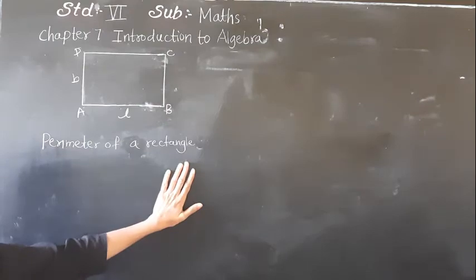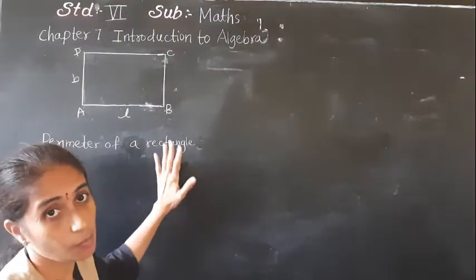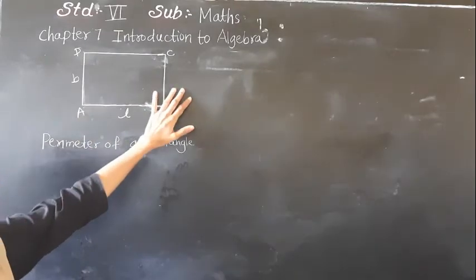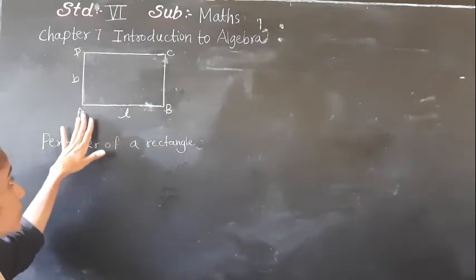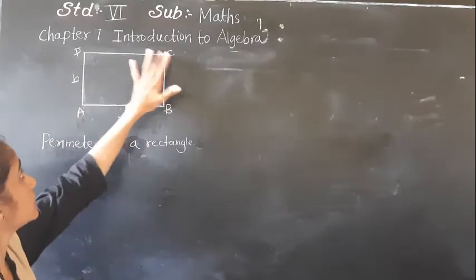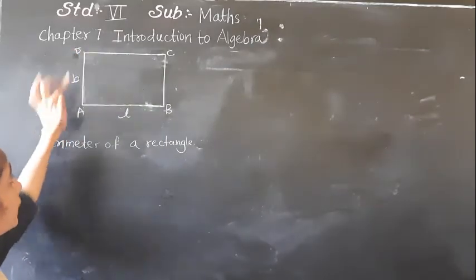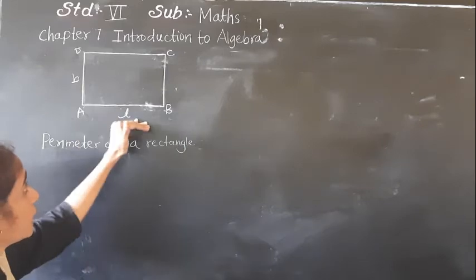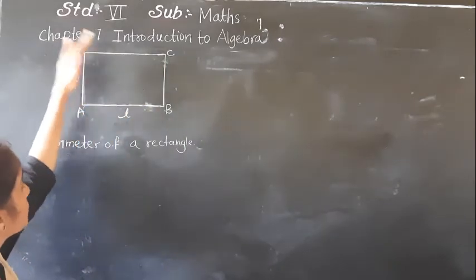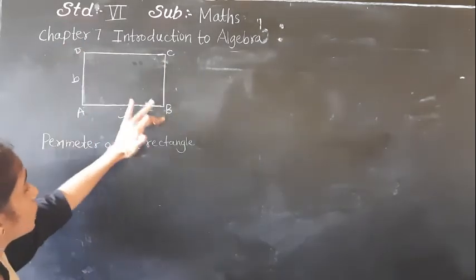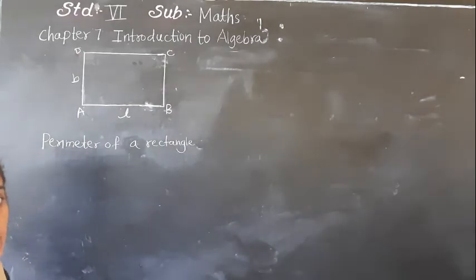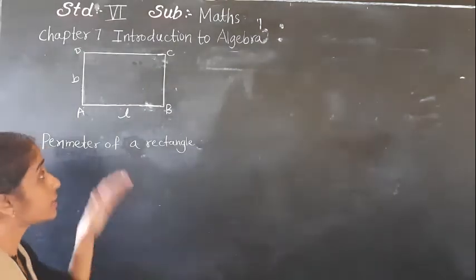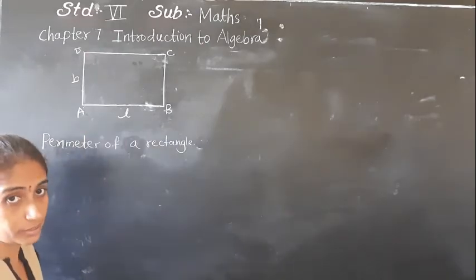Now what is a rectangle? It has 4 sides — AB, BC, CD, and DA — and its opposite sides are equal. AB is equal to CD, and BC is equal to AD. Each angle is 90 degrees.